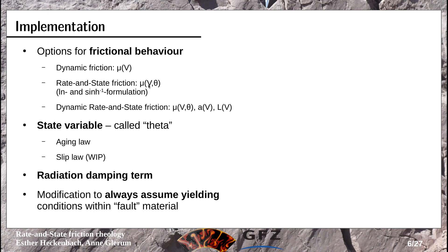I also put in rate and state friction, where friction doesn't only depend on velocity but also on state. I put in two formulations for that — a regularized one and the standard one — and I also put in dynamic rate and state friction where the parameters a and L vary with velocity, though I haven't tested it yet. I put in a state variable field called theta, similar to how it's done in the elasticity rheology.